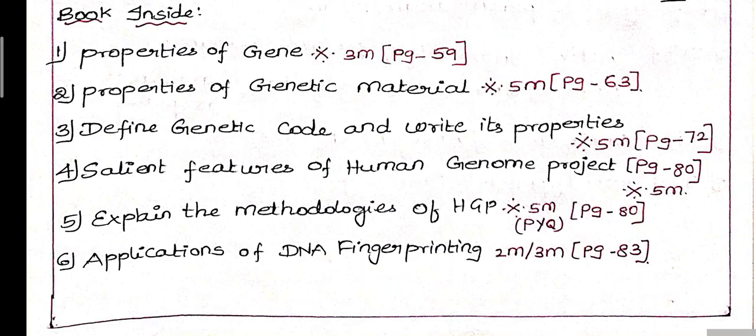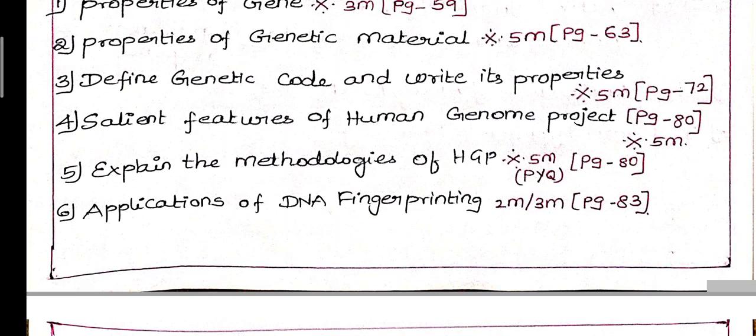Fourth question: Salient features of Human Genome Project, sometimes abbreviated as HGP. This is a 5-mark compulsory question on page 80. Any question on Human Genome Project from this topic is compulsory.